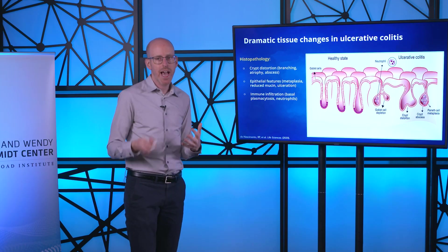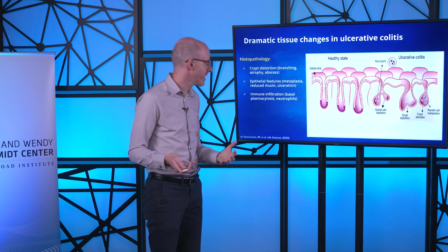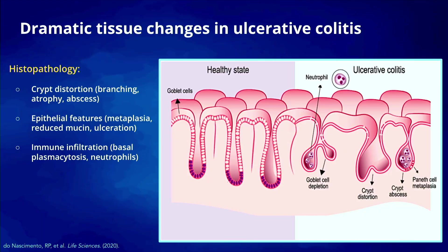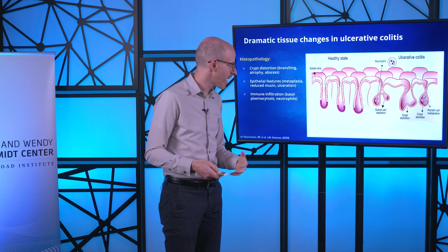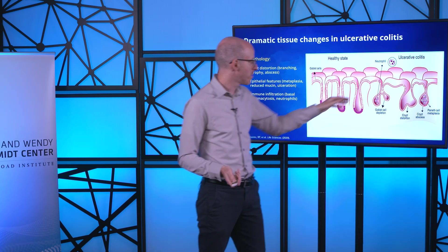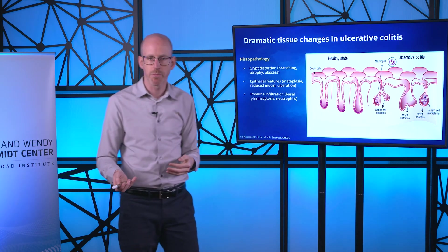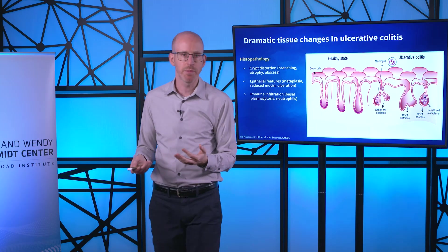In ulcerative colitis, there are dramatic changes to normal colon histology. Comparing healthy colon to ulcerative colitis, there are three big histological changes. First is crypt distortion — normal colonic crypts become distorted or develop abscesses. Second, there are epithelial changes such as metaplasia, which is the appearance of a new cell type not normally found in that tissue. Third, there is immune infiltration, where immune cells show up causing chronic inflammation in the mucosal layer — including neutrophils responding to bacteria in the colon and plasma cells, a type of B cell.